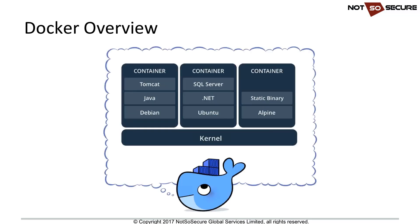Docker is what many call the next evolution in system management. Earlier, VMs loaded the entire OS before running applications. With Docker, you share the base OS kernel and have isolated environments dealing with one service at a time — initially one process per container, then one service per container. For example, a static binary on Alpine Linux, Debian running Java with Tomcat, or Ubuntu with .NET and SQL Server.